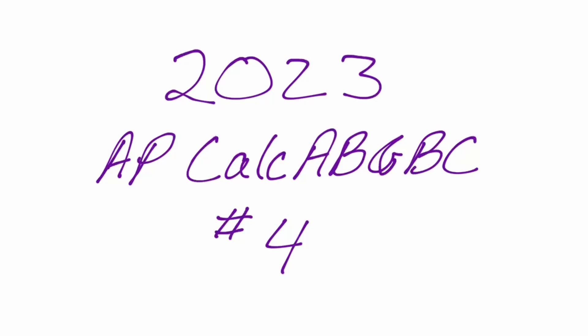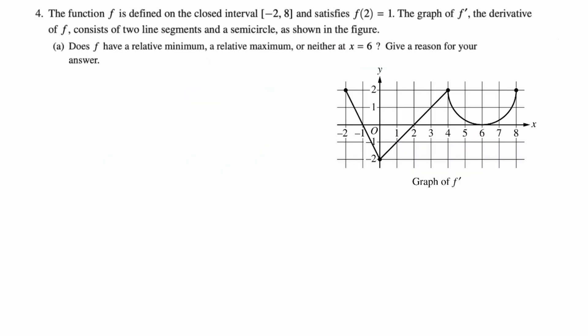Okay, in this video we're going to be doing number four from the 2023 AP Calculus AB and BC exams, a graph analysis or given the first derivative type of problem. Let's take a look. Function f is defined on the closed interval from negative two to eight, satisfies f of two equals one. The graph of f prime, the derivative of f, consists of two line segments and a semicircle as shown in the figure.